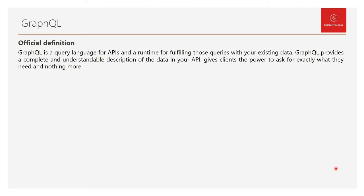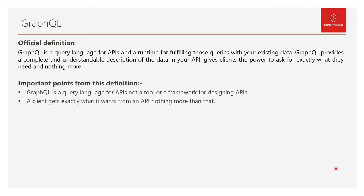There are a few important points mentioned in this definition. First, GraphQL is a query language for APIs, not a tool or a framework for designing APIs. So GraphQL is all about querying an API, not designing an API. Second, a client gets exactly what it wants from an API, nothing more than that. So unlike REST where we get the full representation of a resource, in GraphQL we get exactly what we want.